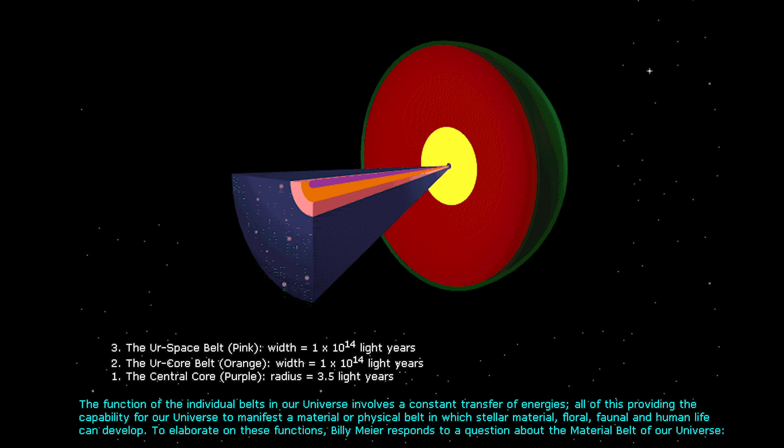So then, where are the remaining three layers? The outer layers described are so incredibly large that the innermost layers would not even show up as a pinpoint of color, yet they are huge distances nonetheless. Below is an expanded view of our interior portion of our universe, starting with the blue material universe belt described above, and the remaining three belts, pink, orange, and purple, shown as an exploded pie segment. Note how significantly small our material universe actually is when compared to its entire scope. Number three, the Ur space belt, pink, width equals 1 times 10 to the 14th light years. Number two, the Ur core belt, orange, width equals 1 times 10 to the 14th light years. Number one, the central core, purple, radius equals 3.5 light years.